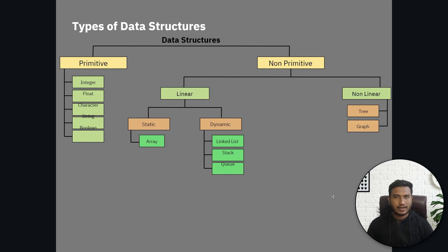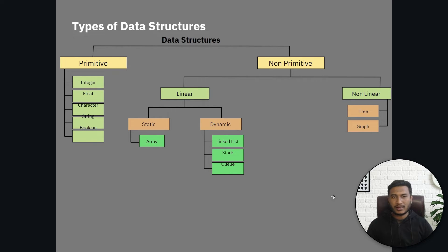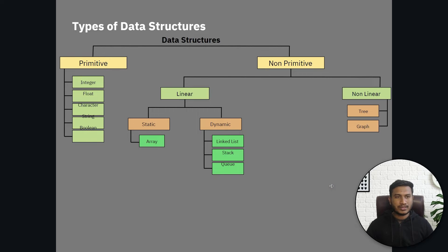Hello everyone, welcome back with another video. My name is Bappi Hamed and I'm your host. In our previous video we already saw why data structure and algorithm is so important. In this video I'm going to discuss different types of data structure and algorithm. There are two kinds of data structure: the first one is primitive data structure and the second one is non-primitive data structure.